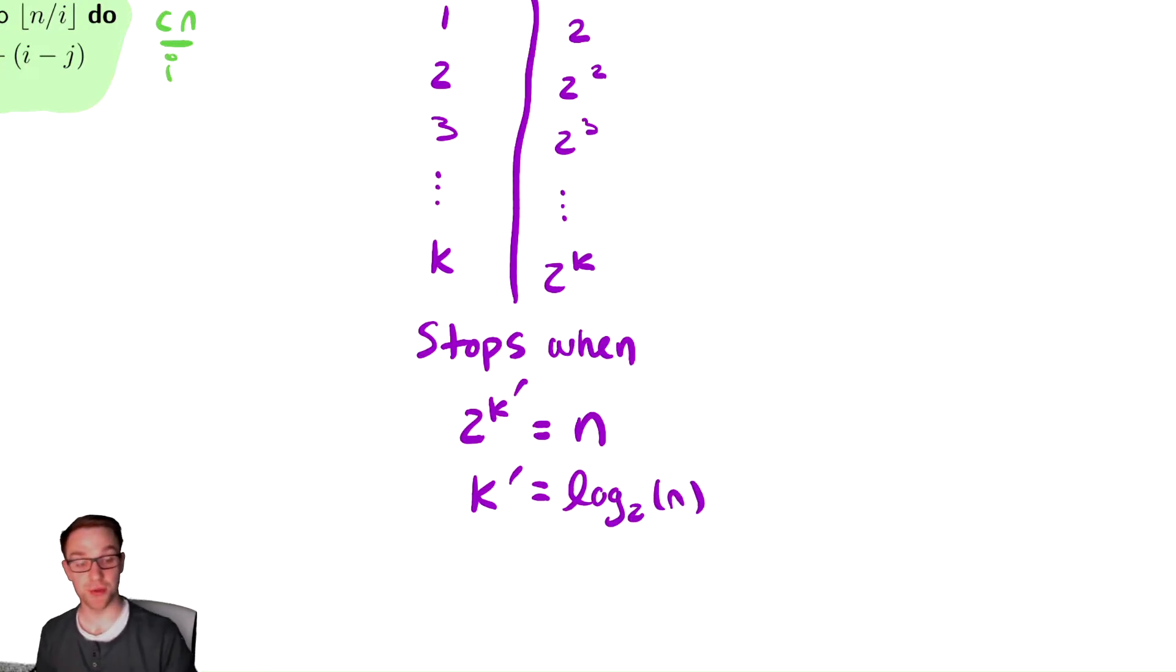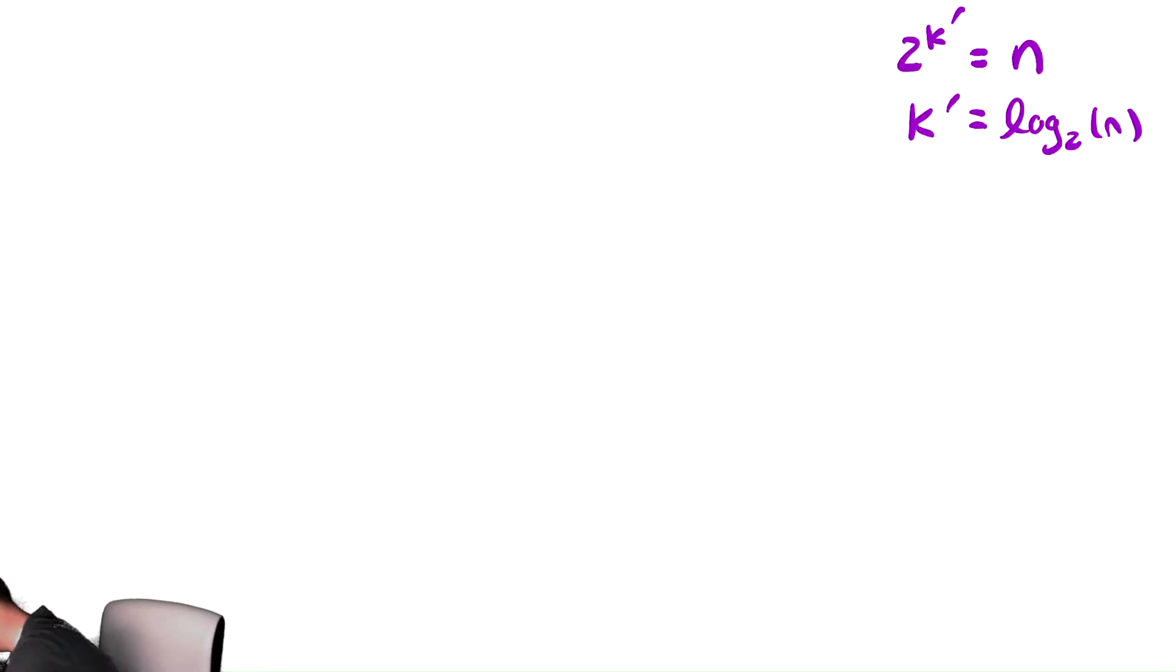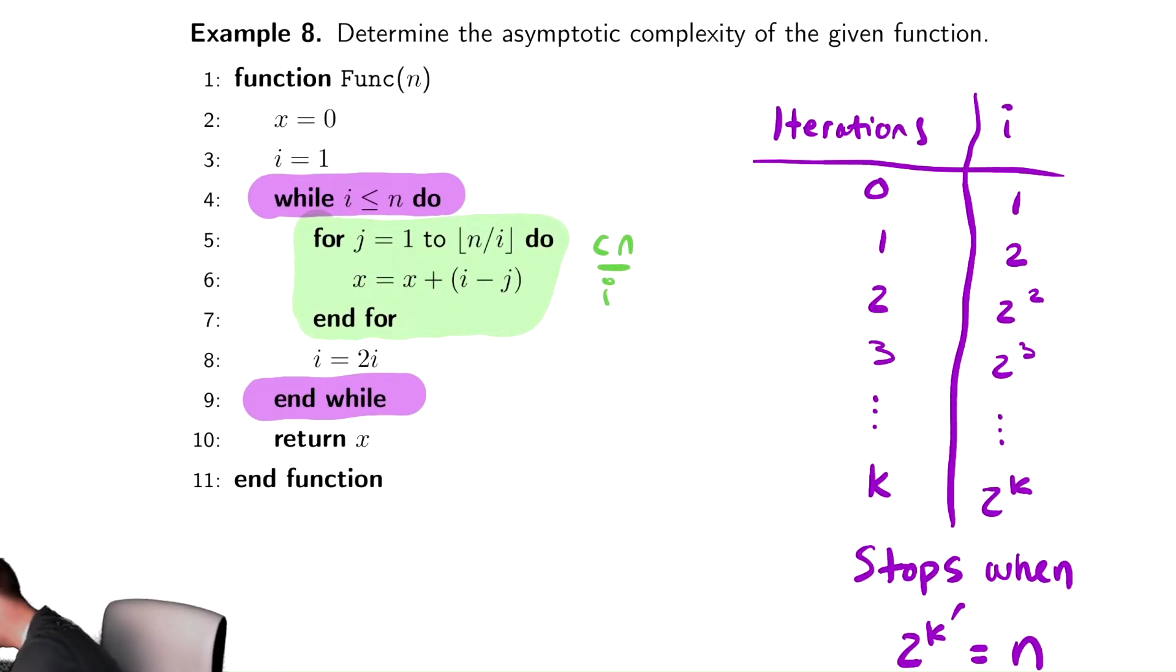And now having seen it twice we're going to go through the next steps in a much more fast fashion. So we get T(n) equals k prime, which is equal to the sum over all the values of i of cn divided by i. That comes from the fact that the body of the while loop takes cn divided by i time.